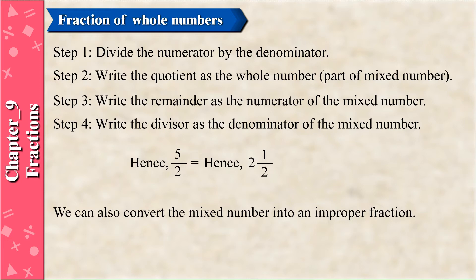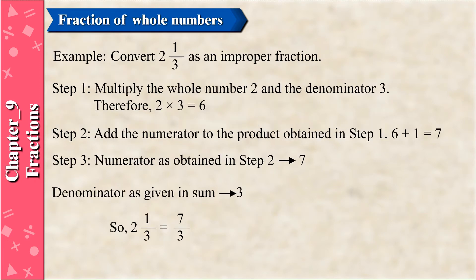We can also convert a mixed number into an improper fraction. Example: Convert 2 and 1/3 as an improper fraction. Step 1: Multiply the whole number 2 and the denominator 3. Therefore, 2 × 3 = 6. Step 2: Add the numerator to the product: 6 + 1 = 7. Step 3: The numerator is 7, and the denominator as given is 3. So, 2 and 1/3 = 7/3.